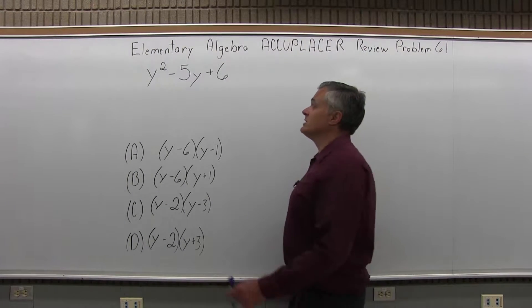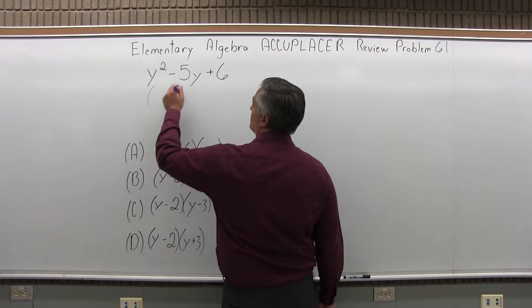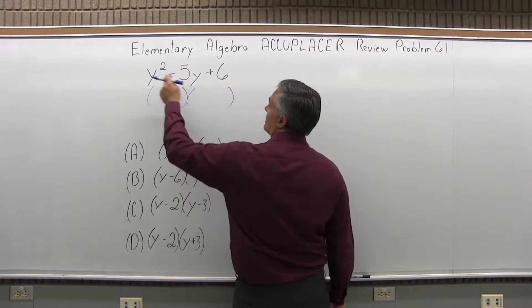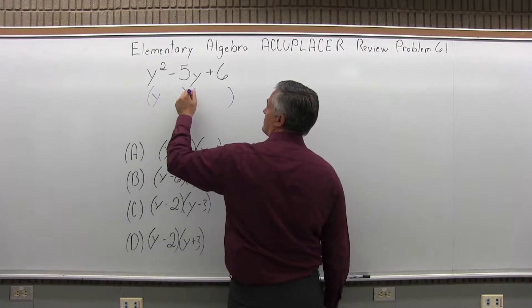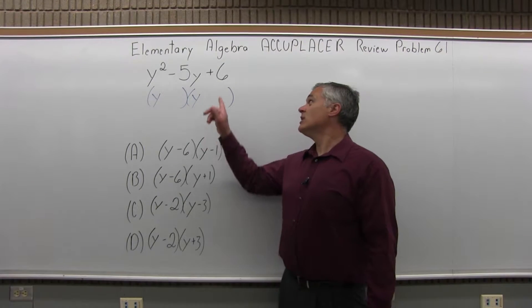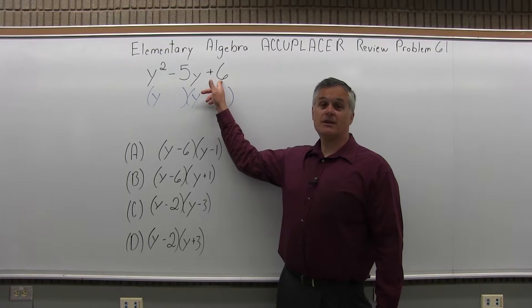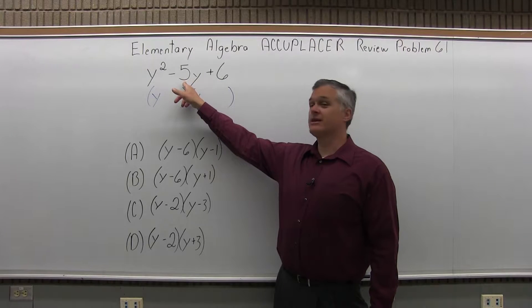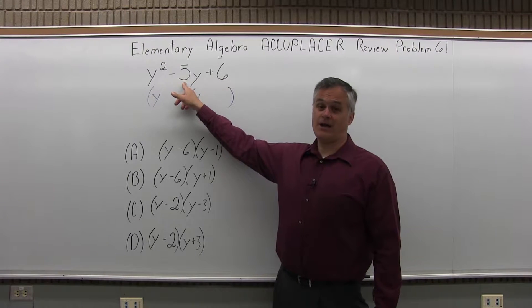What they want you to do is factor it, split it up into two parentheses. I'm starting with y squared, so my parentheses are going to go y, y. Now we have to figure out two numbers that multiply to make 6 and add or subtract to give me 5.